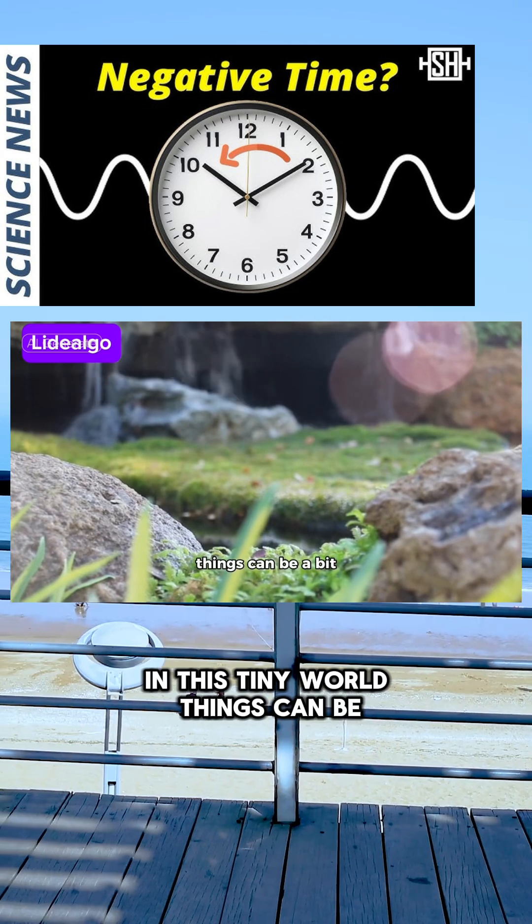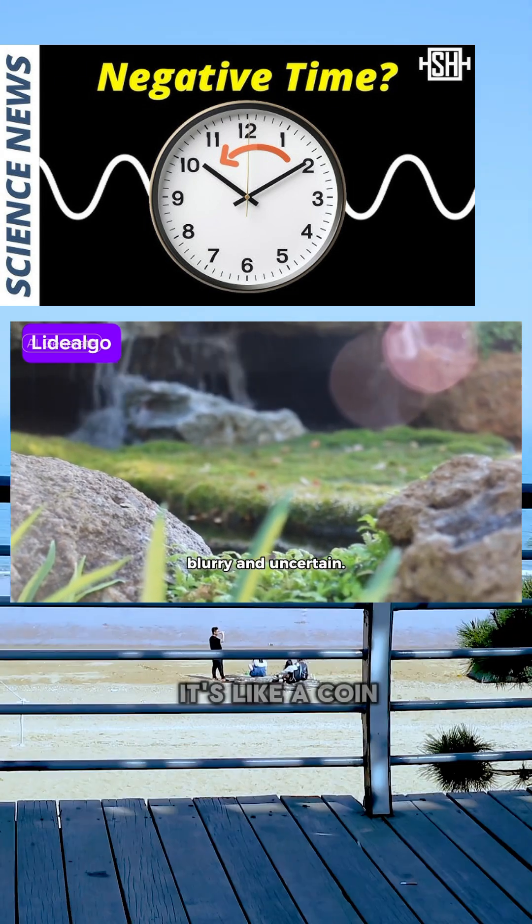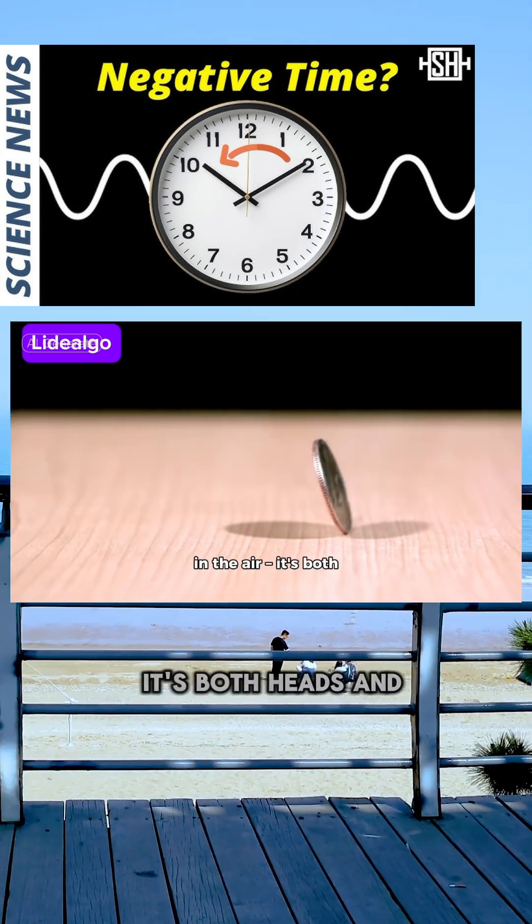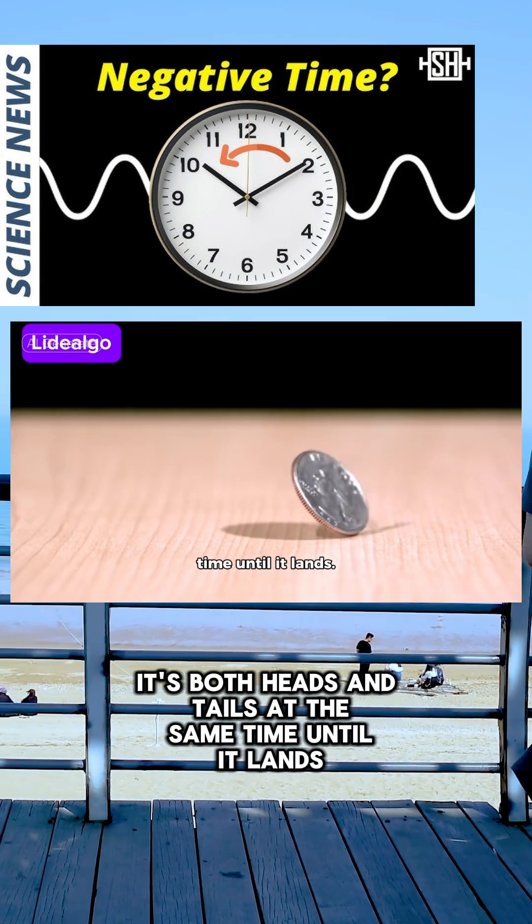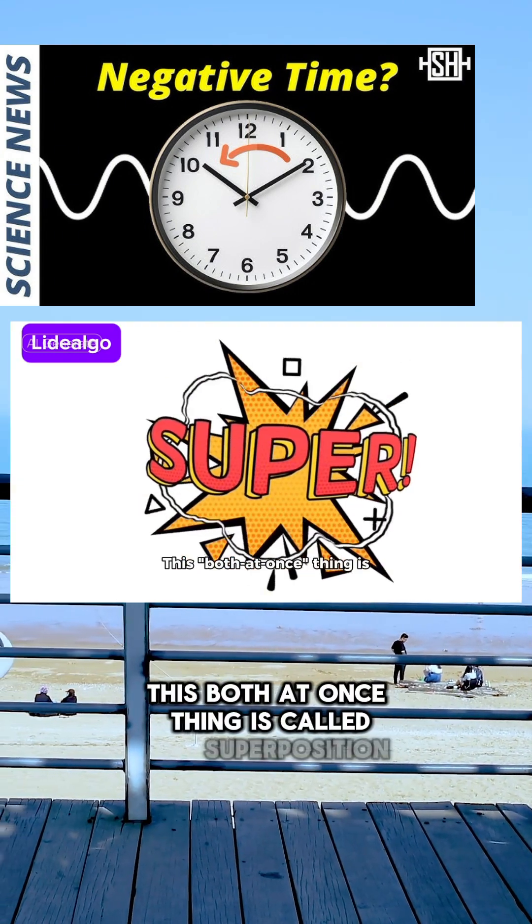In this tiny world, things can be a bit blurry and uncertain. It's like a coin spinning in the air, it's both heads and tails at the same time until it lands. This both-at-once thing is called superposition.